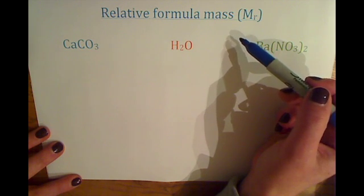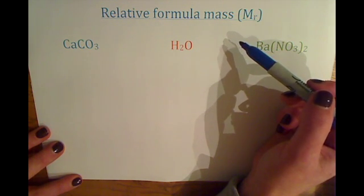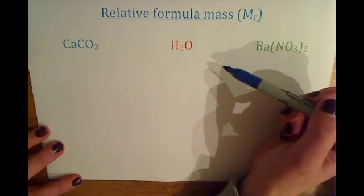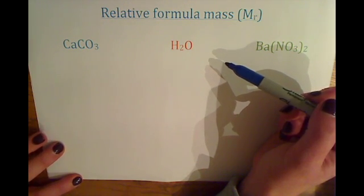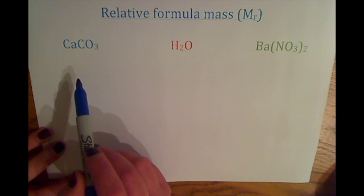If you get a question about relative formula mass, as long as you follow a few rules, it is simply adding up numbers that you find in the periodic table. So I'm going to show you a couple of examples to help you.